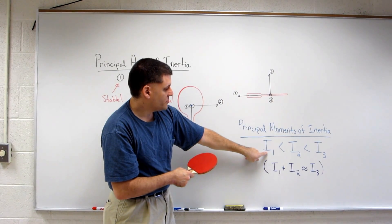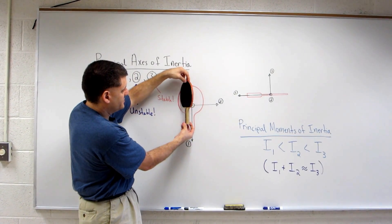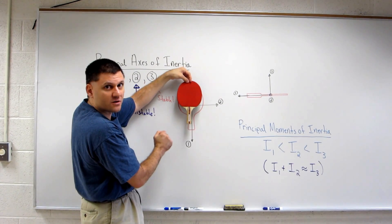are ordered such that the moment of inertia for rotation about the one axis, so this rotation axis, is the smallest of the three,